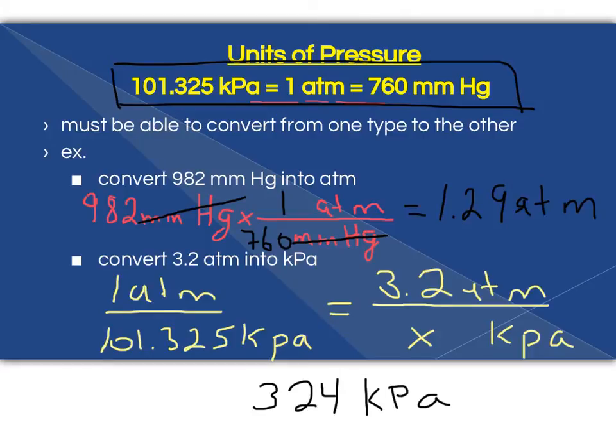We'll have to turn this into scientific notation for significant digits. So I'm going to have 3.2 times 10 to the 2 kPa.